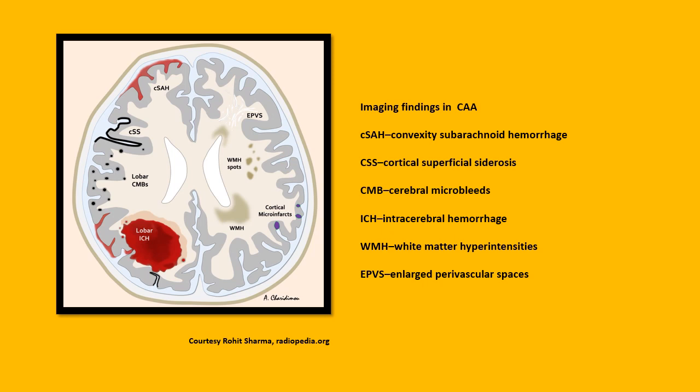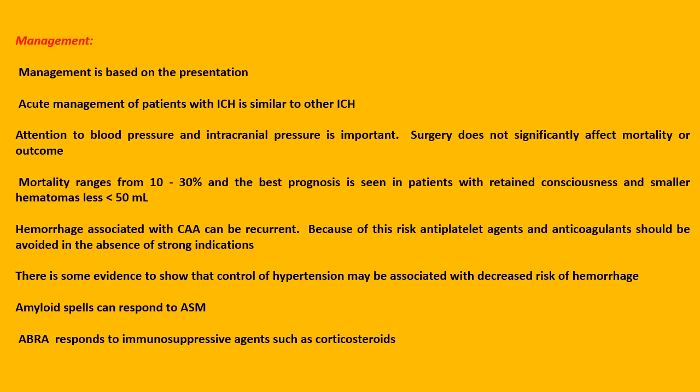This slide shows the various imaging findings in CAA, which include convexity subarachnoid hemorrhage, cortical superficial siderosis, cerebral microbleeds, intracerebral hemorrhage, white matter hyperintensities, and enlarged perivascular spaces.